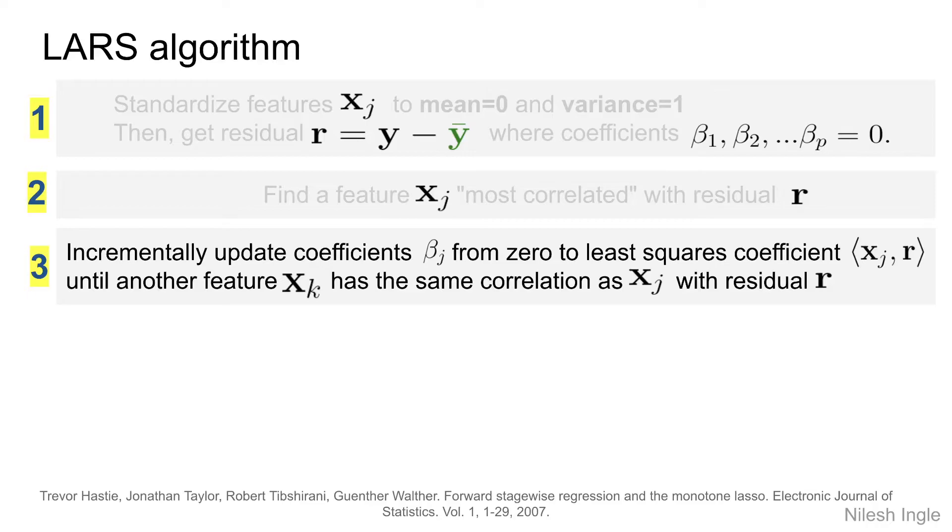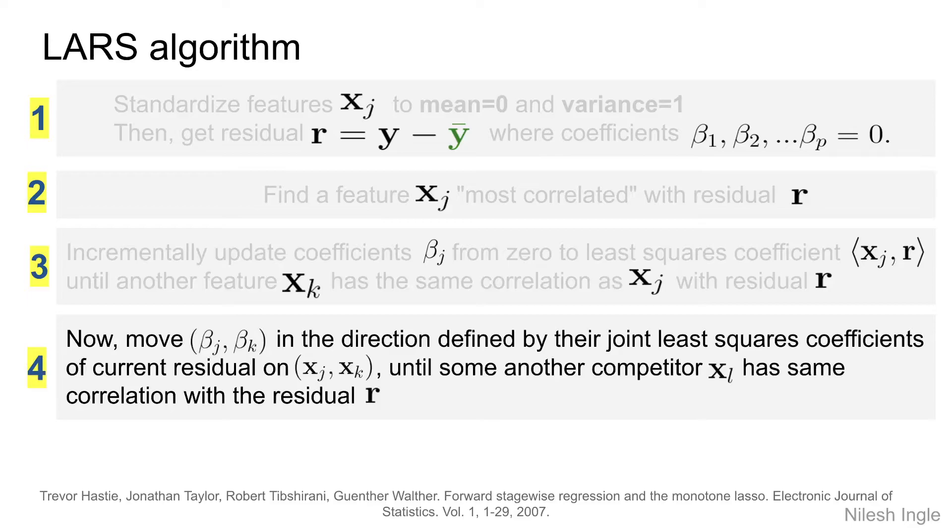In this case, let's say the new feature is xk, and it has the same correlation now with the residual that xj has with the residual. At this time, the active set of features that we are considering are xj and xk, and they have the coefficients beta j and beta k. The reason why we are considering two features now is because in step three we found that while we were working on the beta j coefficient for xj, the feature xk had the same correlation with the residual r as xj had.